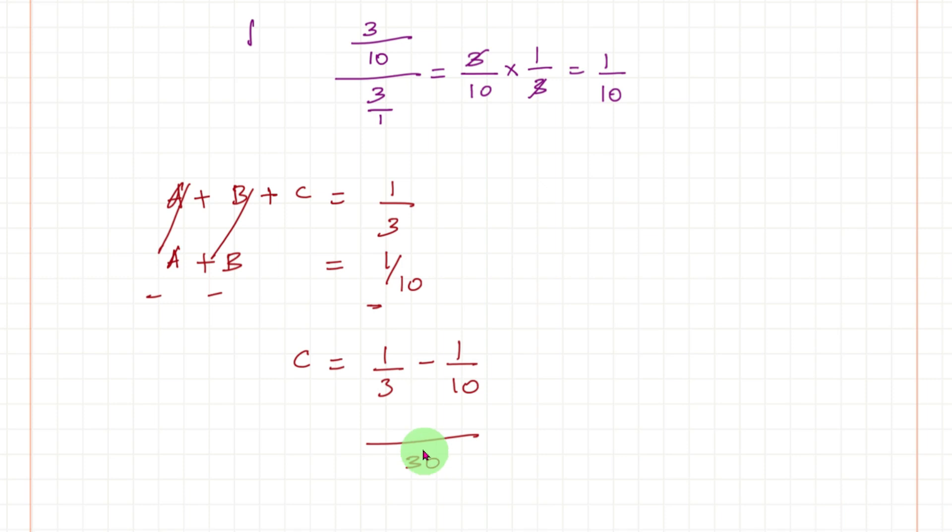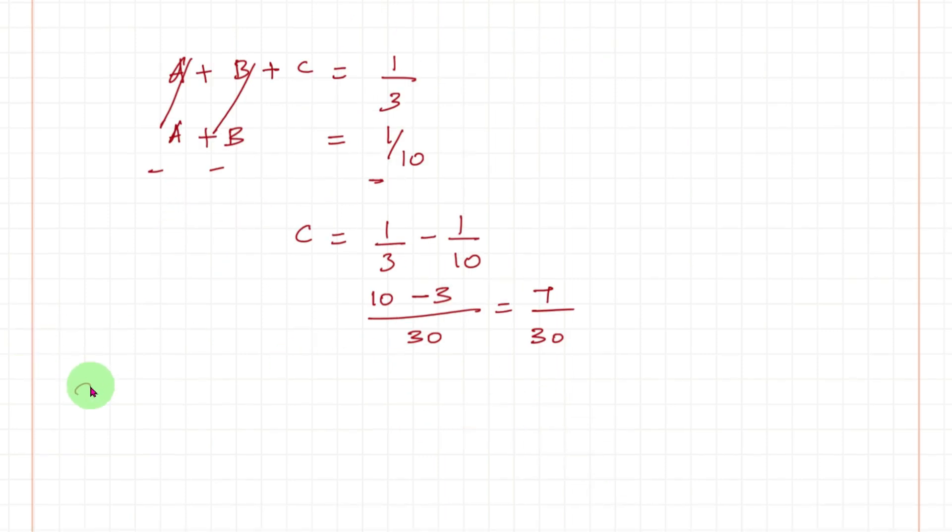Taking LCM, it is 30. So 3 times 10 is 30, 10 minus 3 which equals 7/30. Therefore we have found C's 1 day work. So C's 1 day work is 7/30.